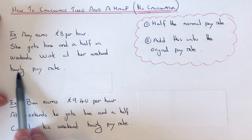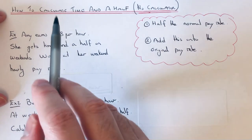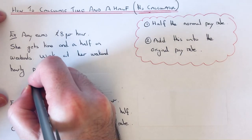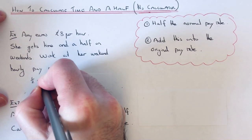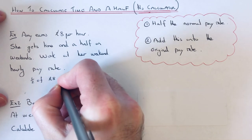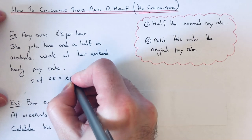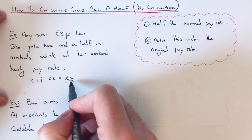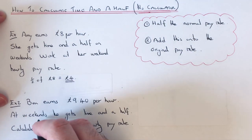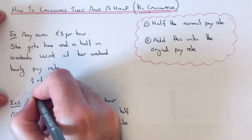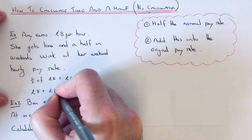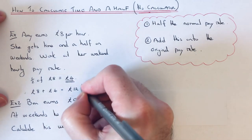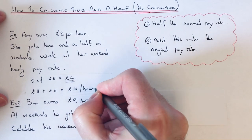We need to work out her weekend hourly pay rate. The first step is to half the eight pounds, so half of eight is four. Once we've got this answer, we add this on to the original pay rate, so we do eight pound add four pound, which is twelve pound.